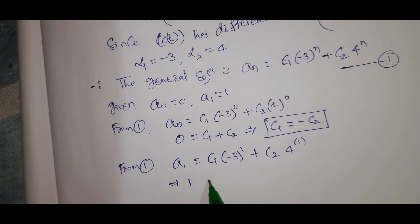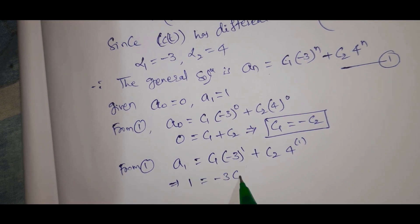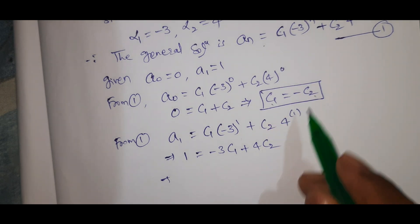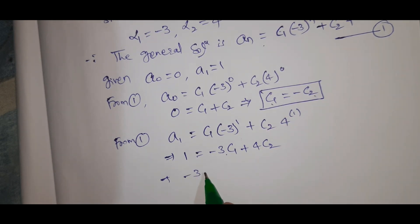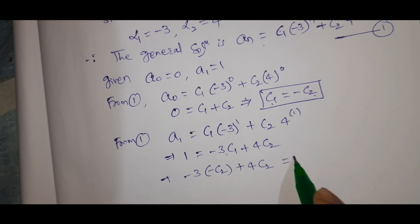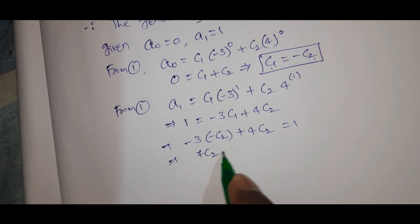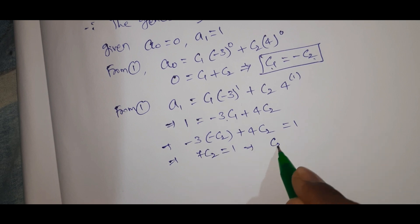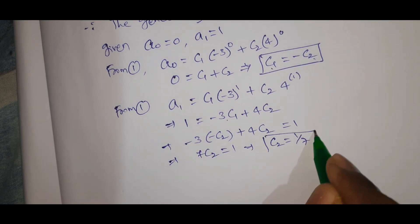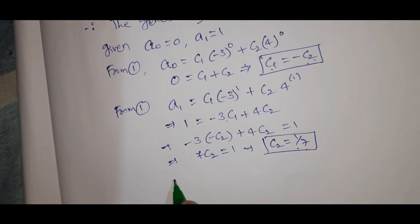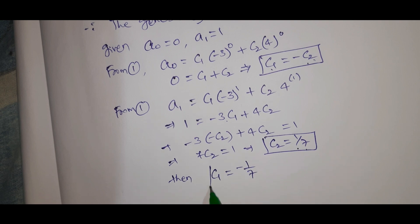For a_1 equal to 1: minus 3C1 plus 4C2 equal to 1. Since C1 equal to minus C2, substituting: minus 3 times (minus C2) plus 4C2 equal to 1, giving 7C2 equal to 1, so C2 equal to 1 by 7.